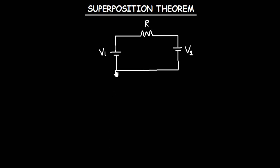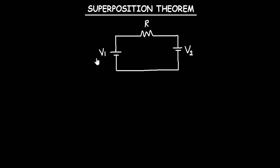So what that means is that when we take this circuit that I have here, which has multiple voltage sources, if you want to calculate for the current or voltage drop across this resistor here, we can do that by considering each of the voltage sources acting alone.